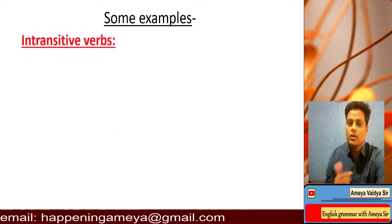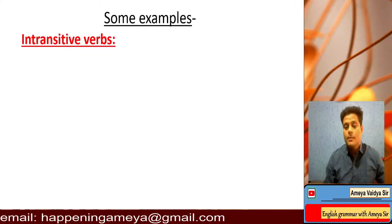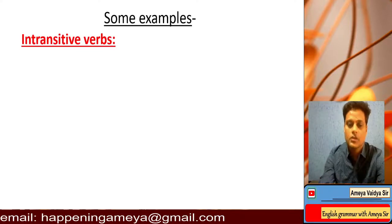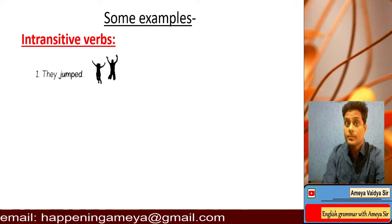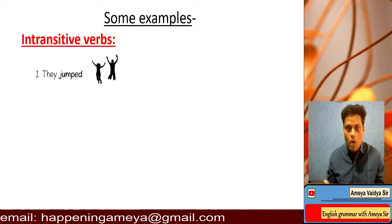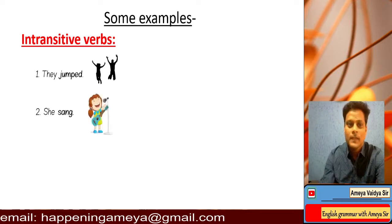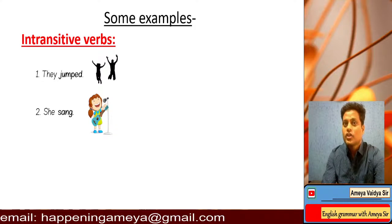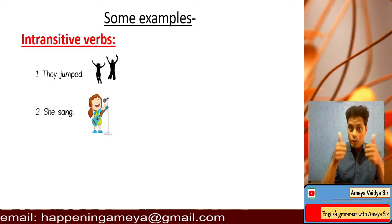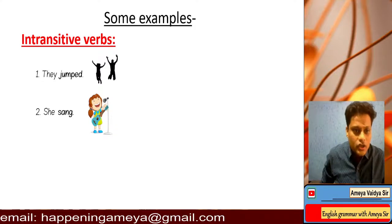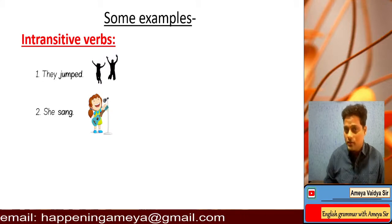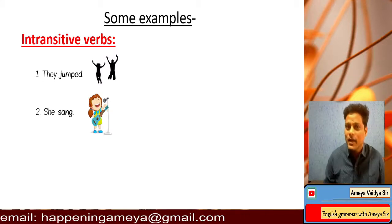Let's now talk about intransitive verbs. First one: 'They jumped.' Is it not clear? You don't want to ask what after that — they jumped, that's it. Next: 'She sang.' She sang, and 'she sang a song' is redundant — a song can be sung, right? So 'she sang' is very clear by itself. That's it.